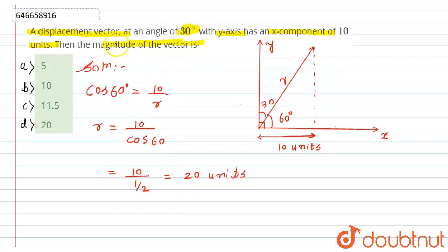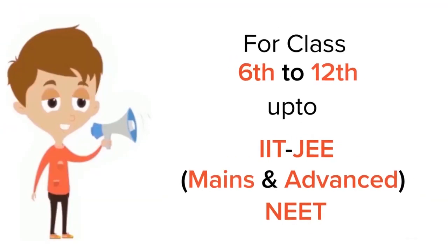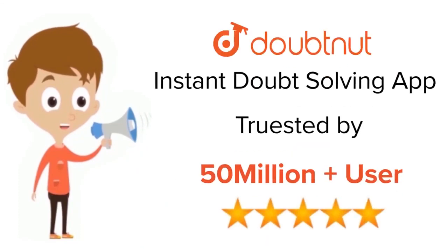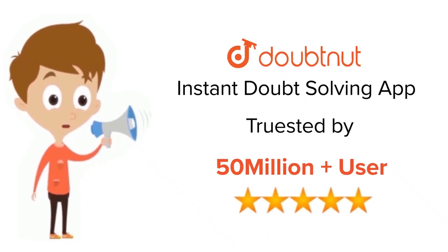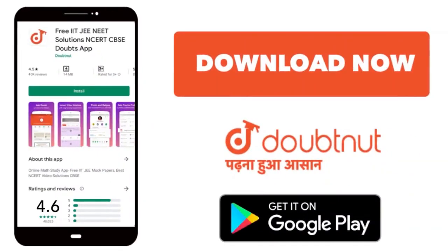Hence, the magnitude of the vector is 20 units, and option D is the correct answer. This is the required solution. For class 6 to 12, IIT JEE, and NEET level — trusted by more than 5 crore students. Download the DoubtNut app today.